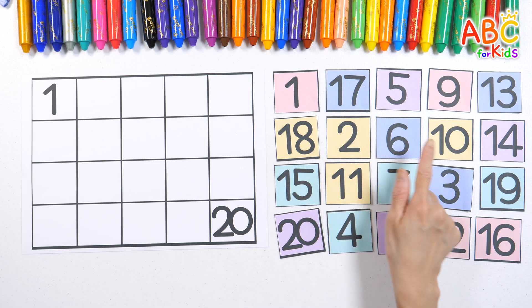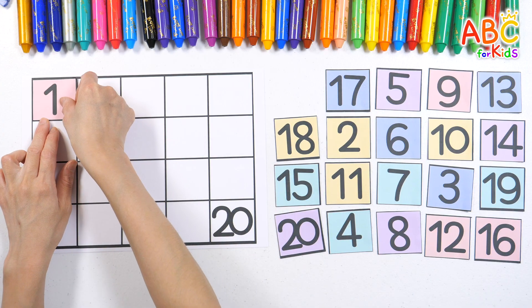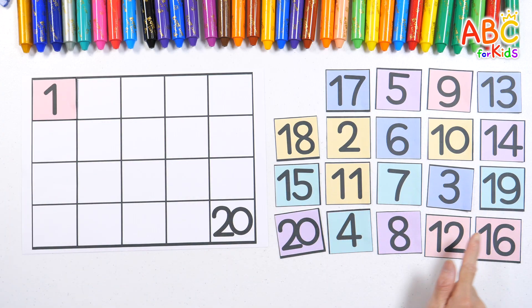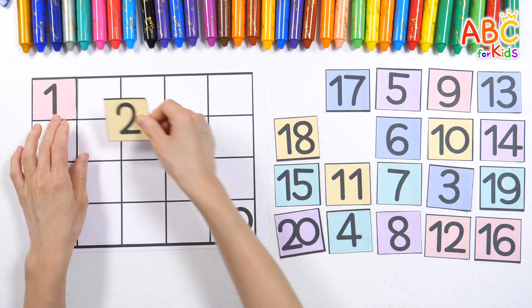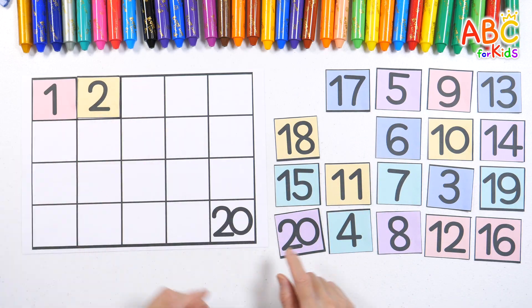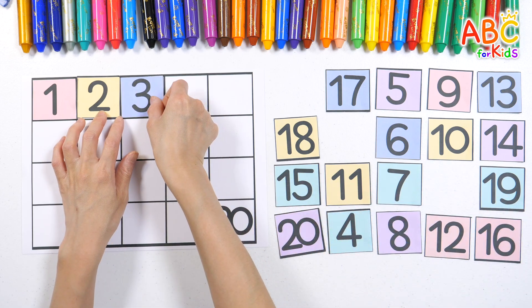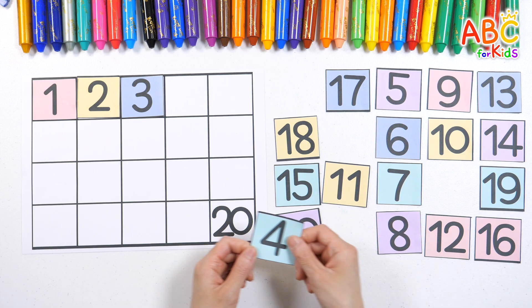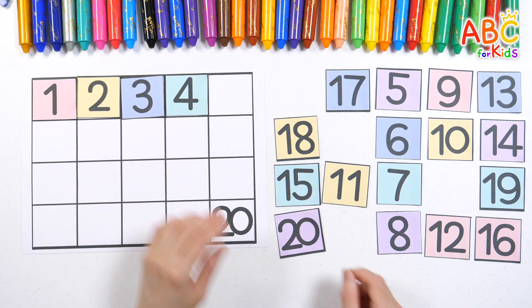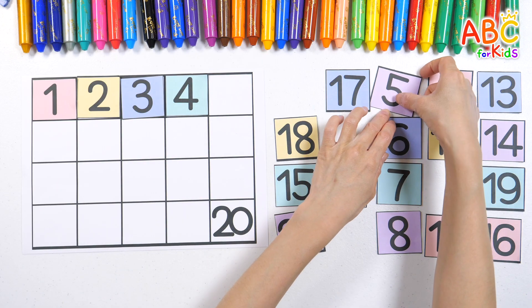First, let's find the number 1. 1, 2, 3, and 4. Let's slowly find the numbers in the right order.